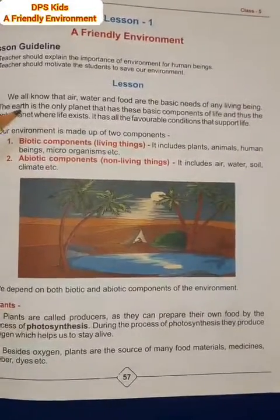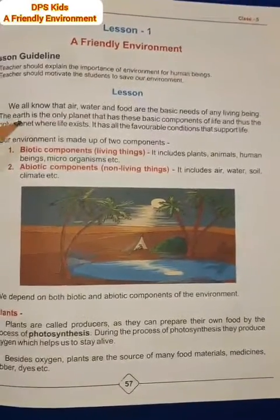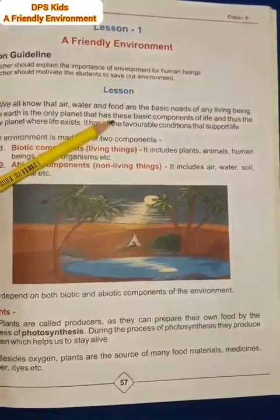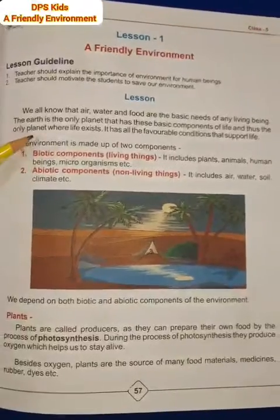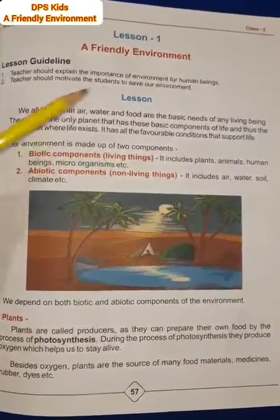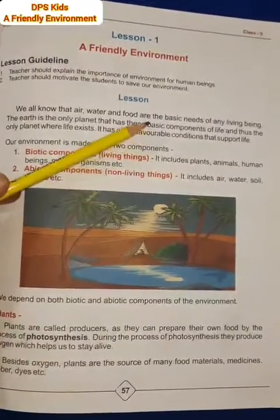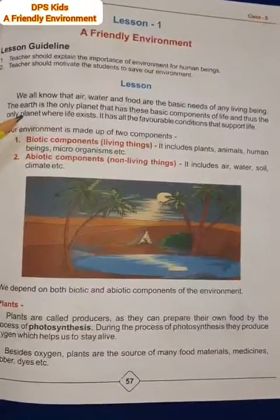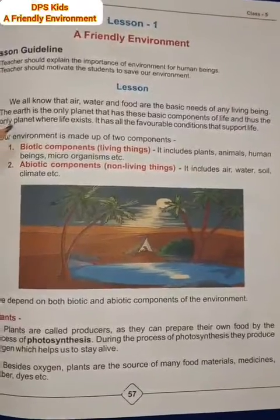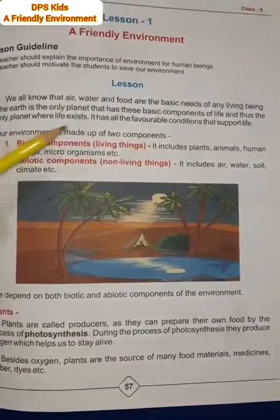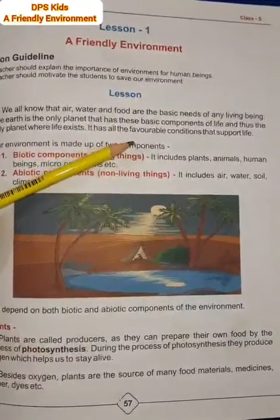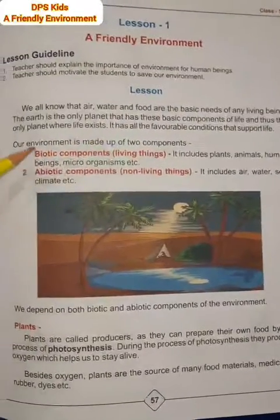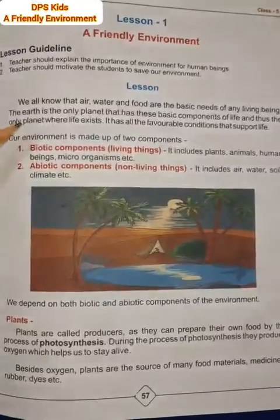हम सभी जानते हैं कि किसी भी living being को जिन्दा रहने के लिए basic needs की जरूरत होती है — air, water और food। Earth अकेला ऐसा planet है जहाँ ये तीनों basic components पाए जाते हैं, इसीलिए Earth is the only planet where life exists। Earth पर सारी favorable conditions हैं जो life को support करती हैं।